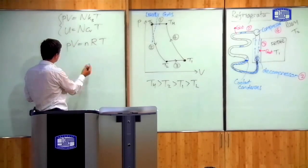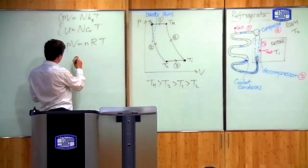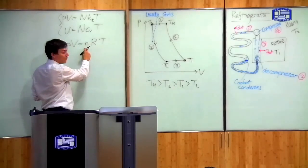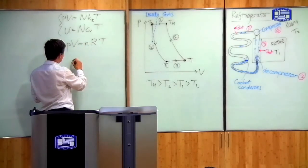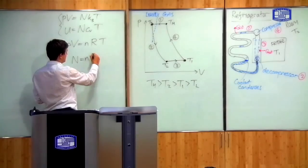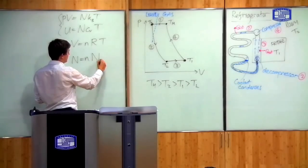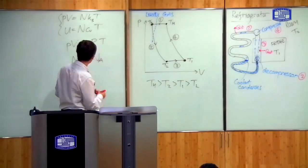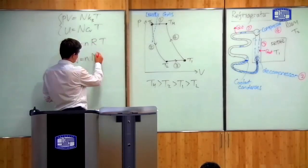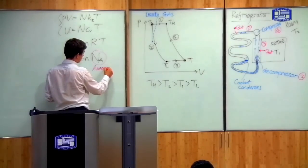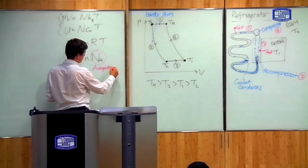So if you've got hydrogen gas, which has a molecular weight of two, then one mole of hydrogen gas will be two grams. So in order to do this, you need to know how many particles are in a mole. The number of particles is equal to the number of moles times the number of particles in a mole, and this thing Na is called Avogadro's constant, or Avogadro's number.